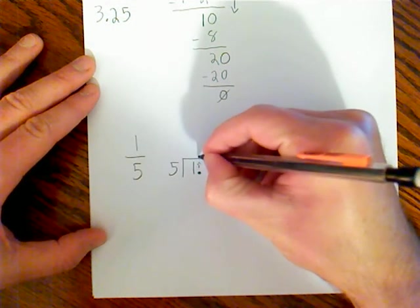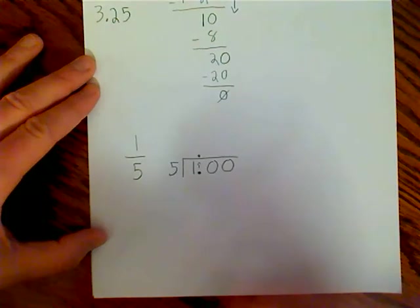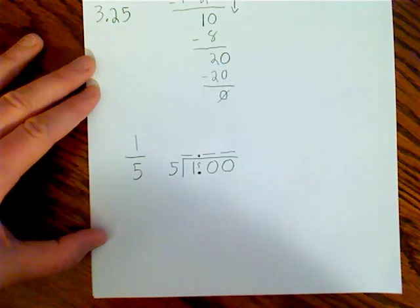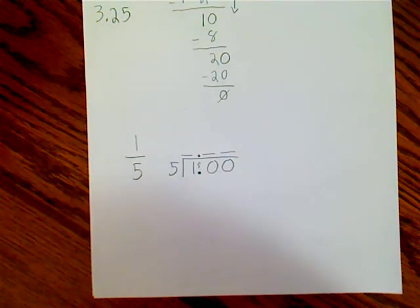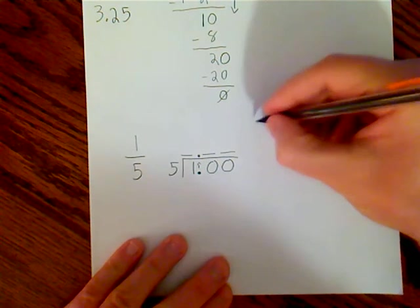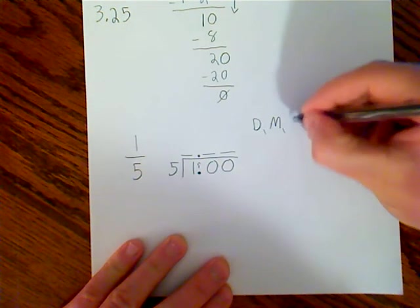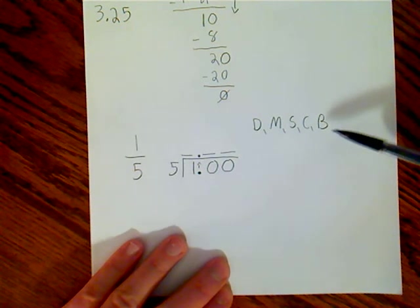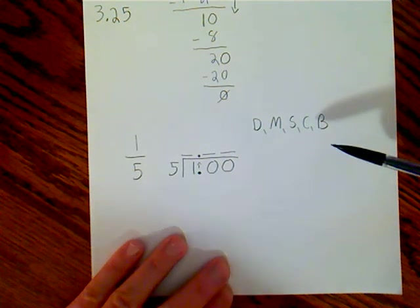And you know what, I'm just gonna go ahead and add two just in case I need them. Wherever my decimal place is, that gets popped up. And I can add my footprints for my place values there. And I'll just write again, Does McDonald's Sell Cheeseburgers.